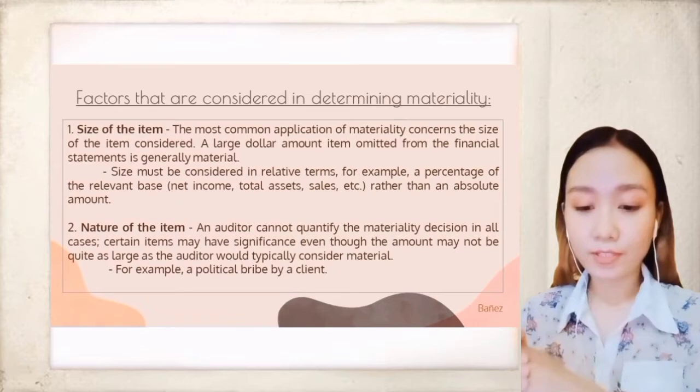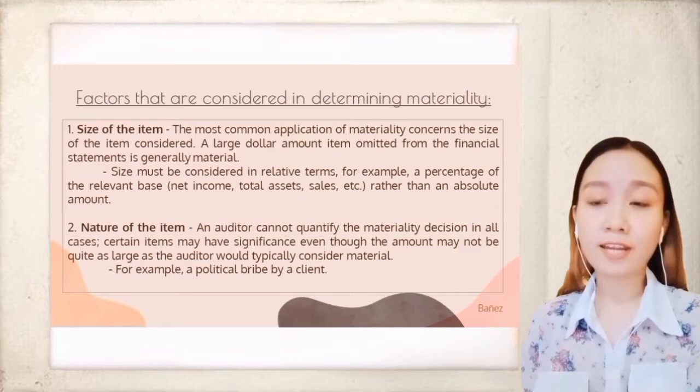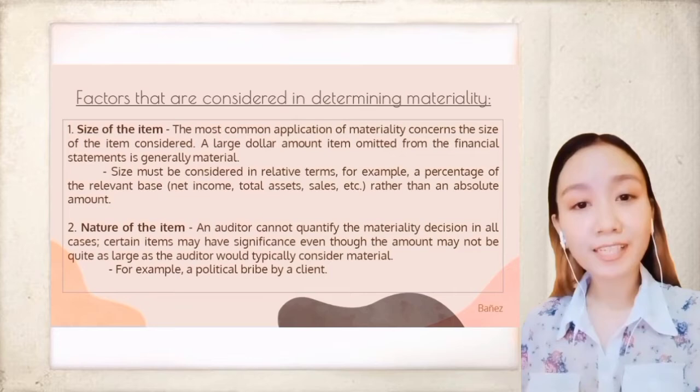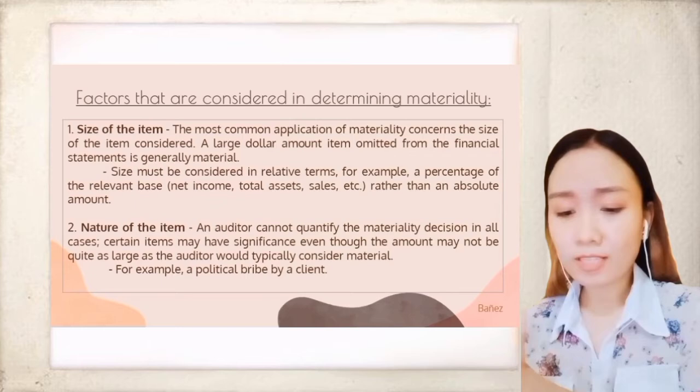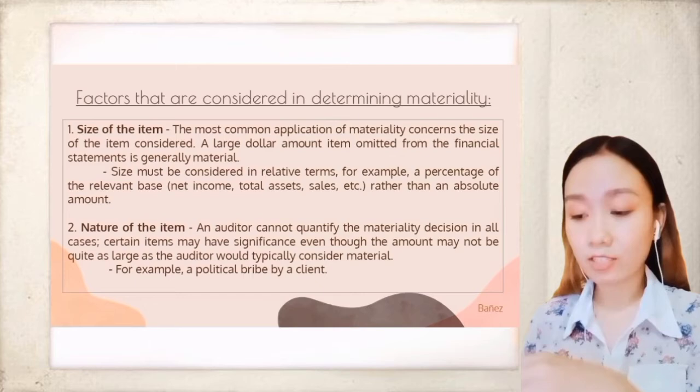The first factor is the size of the item. The most common application of materiality concerns the size of the item considered. A large dollar amount item omitted from the financial statements is generally material. Size must be considered in relative terms — for example, as the percentage of a relevant base like net income, total assets, sales, and so on — rather than an absolute amount.